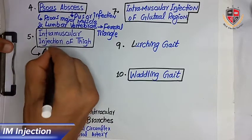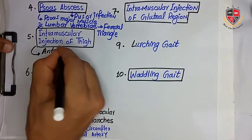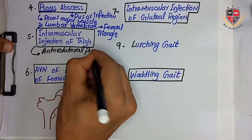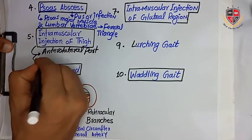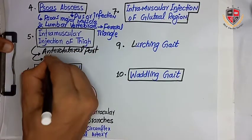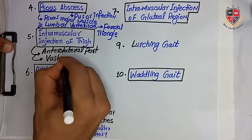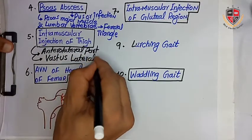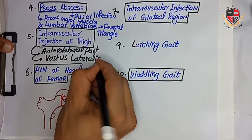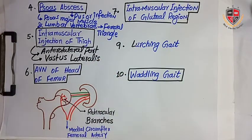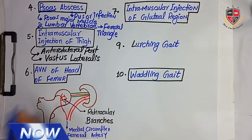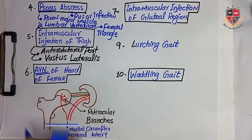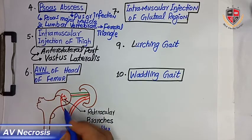The next clinical is intramuscular injection of the thigh. The site of intramuscular injection of the thigh is the anterolateral part of the thigh, and the muscle into which the injection is given is the vastus lateralis.